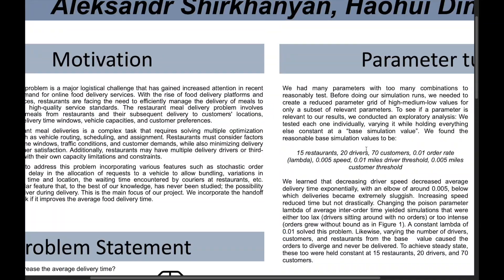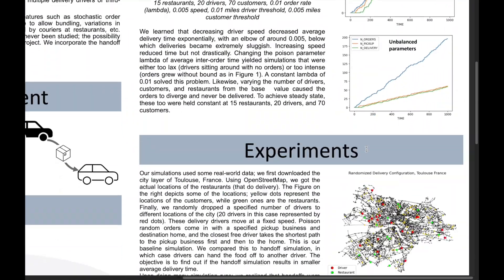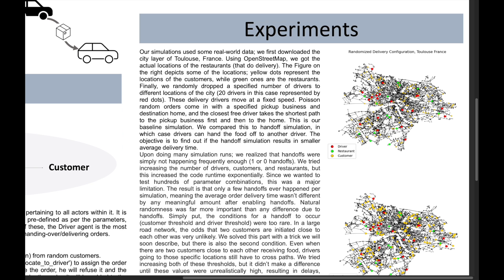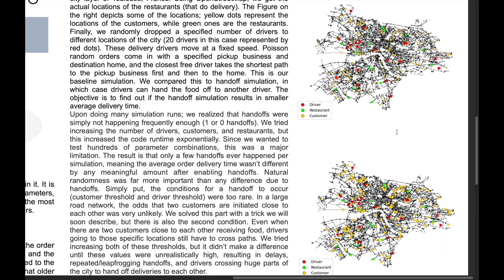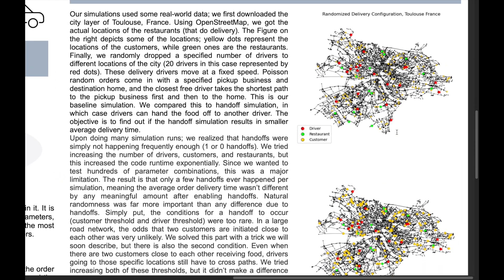And real locations of restaurants that do deliveries are inputted, sourced from OpenStreetMap data. And numbered node is placed at each of these coordinates.